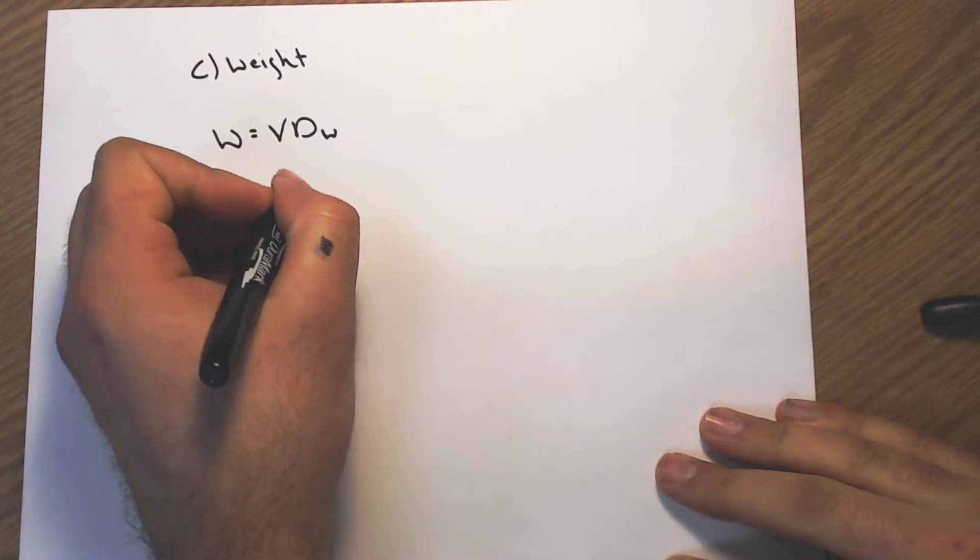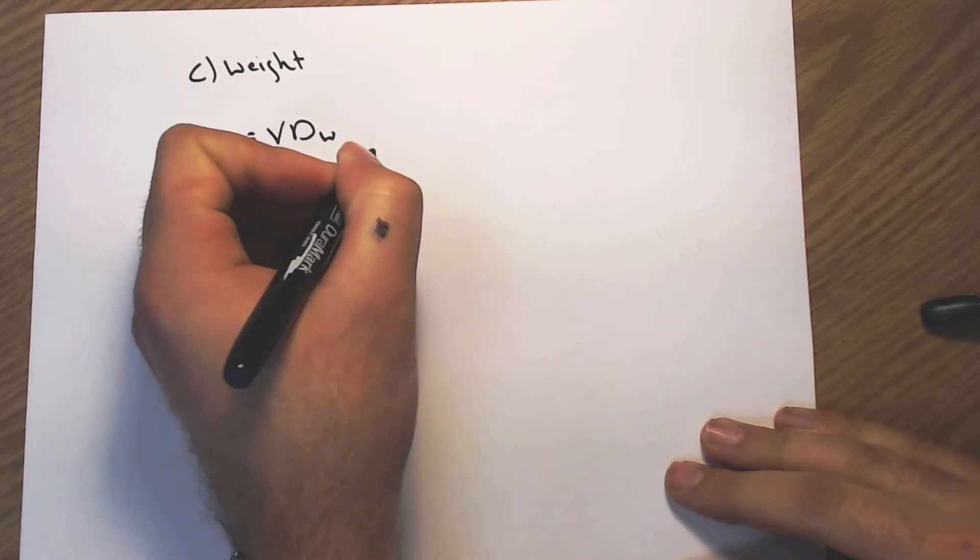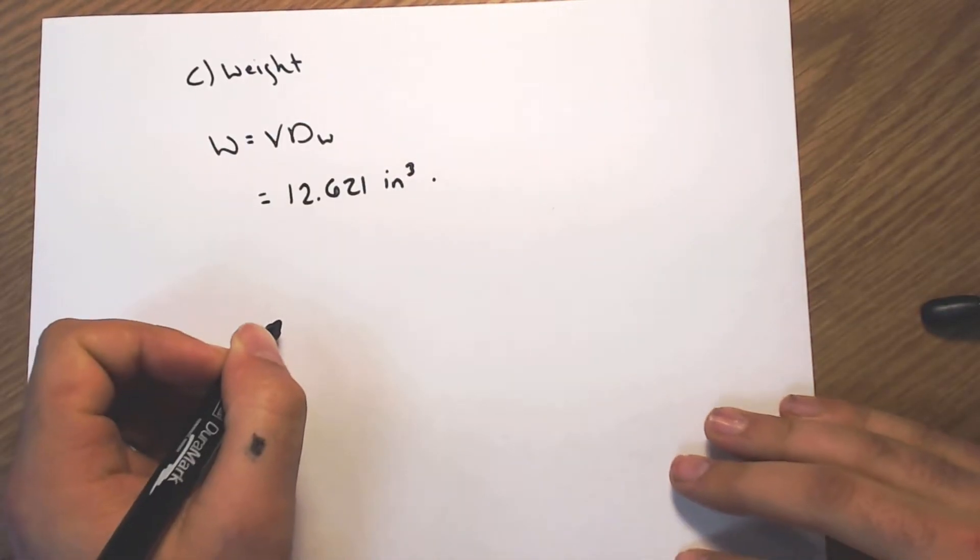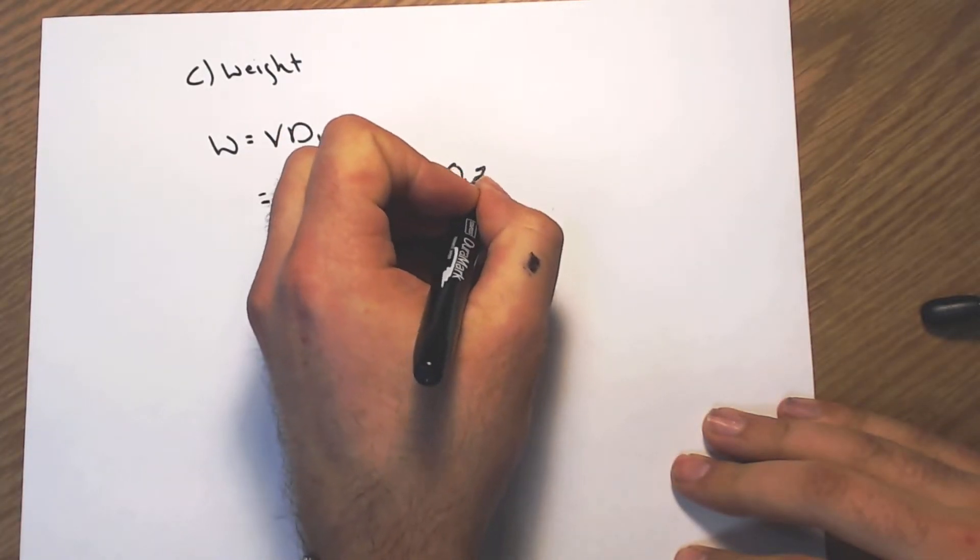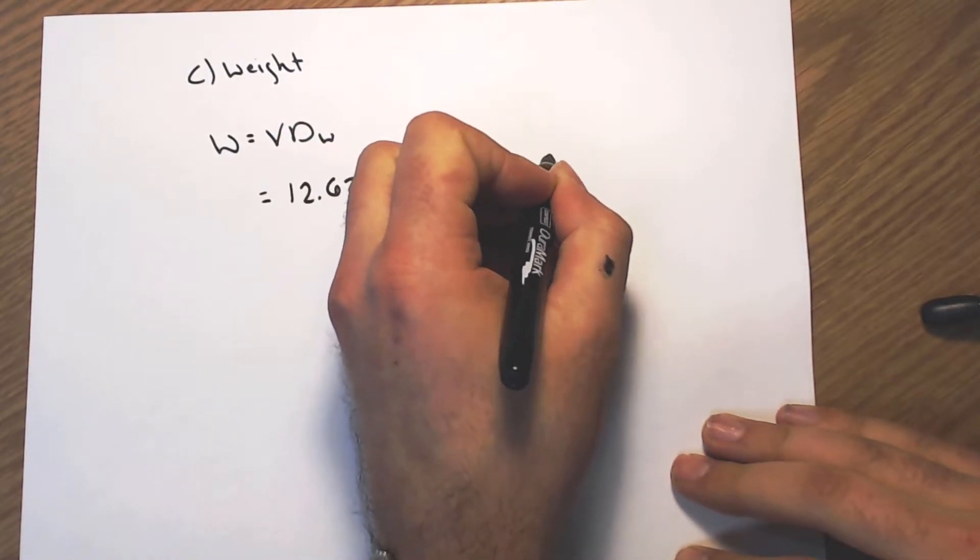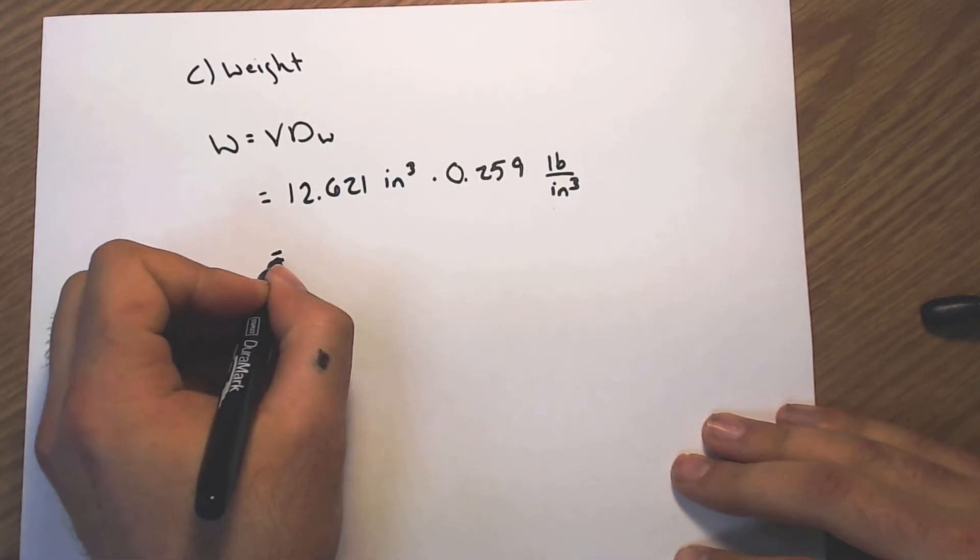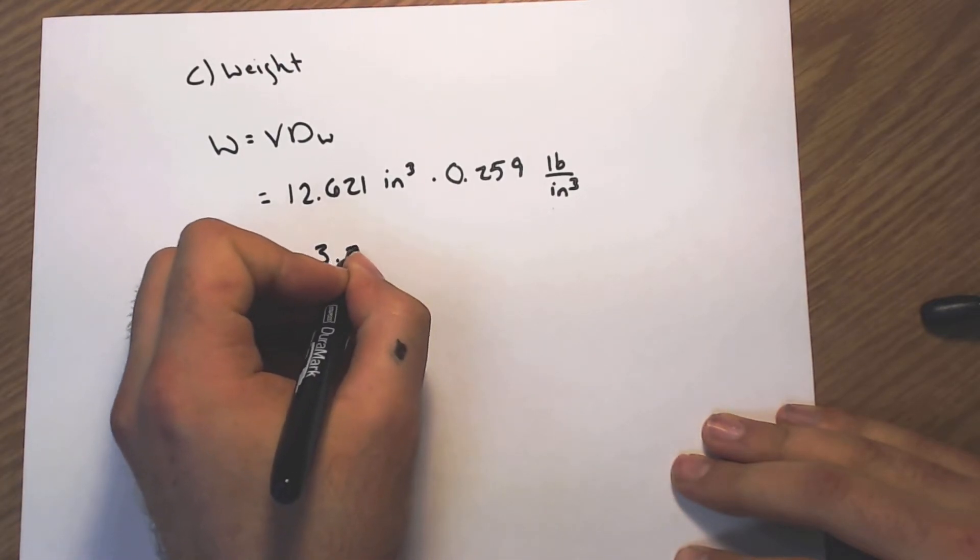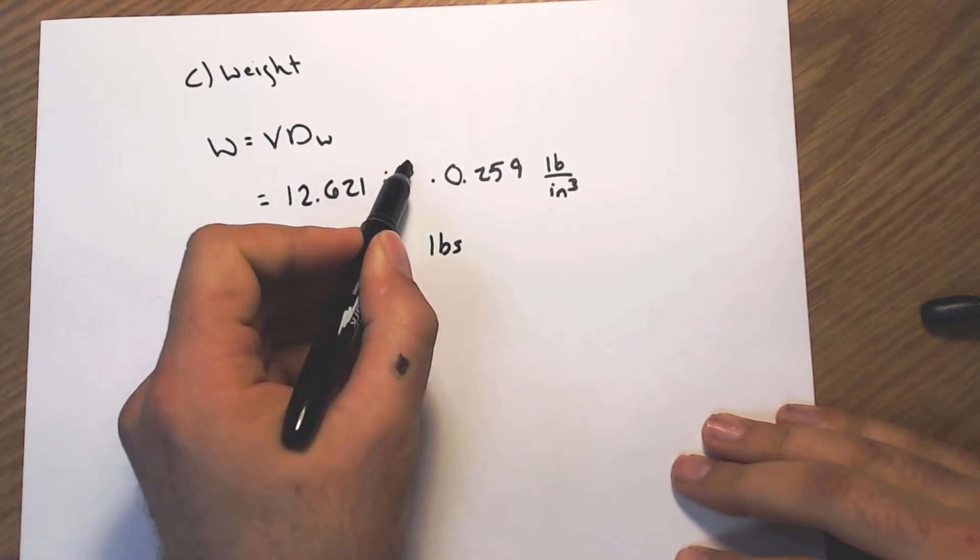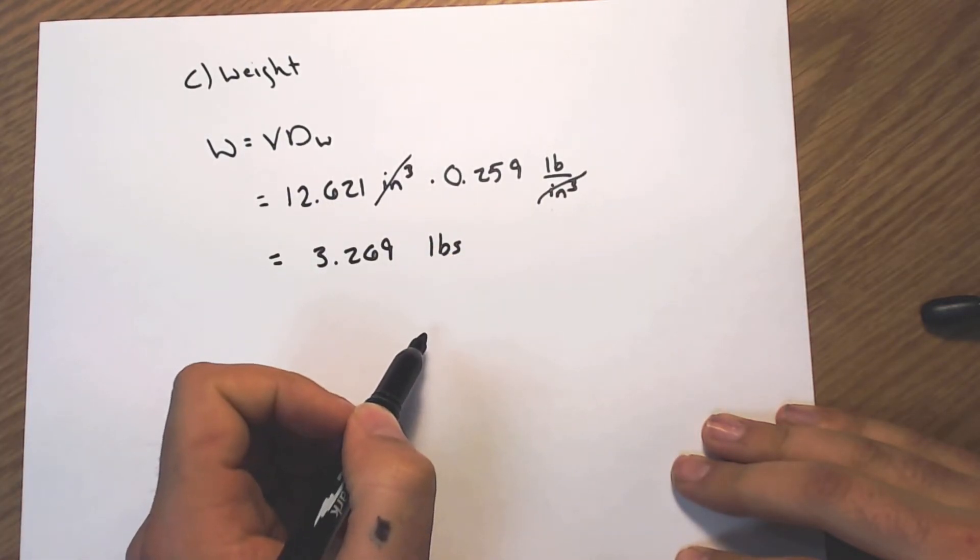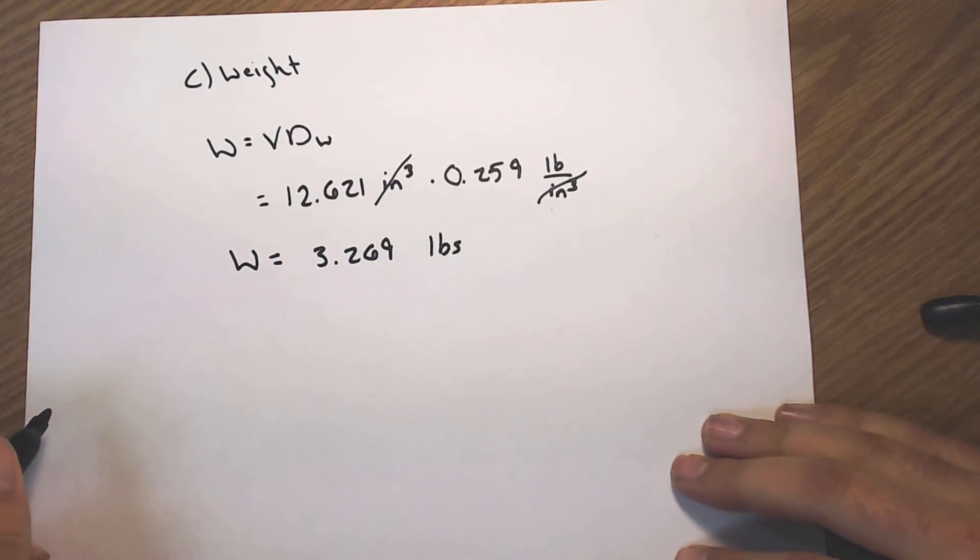I multiply that by the weight density that was given, which was 0.259, and that's pounds per cubic inch. Multiplying all of that, we get 3.269 pounds. These inches here cancel with those inches down there, and now I have found weight. Those were the three things we wanted to see.